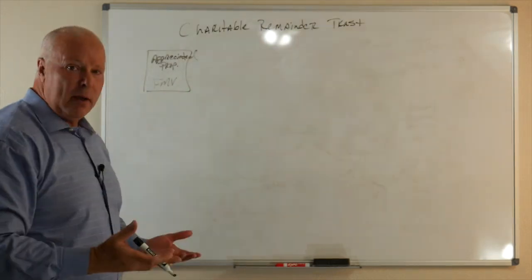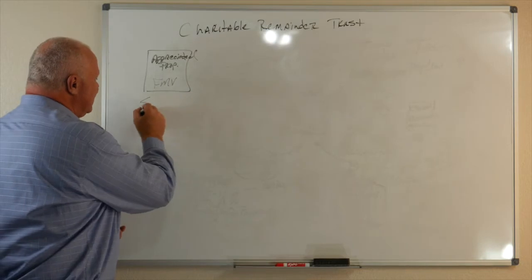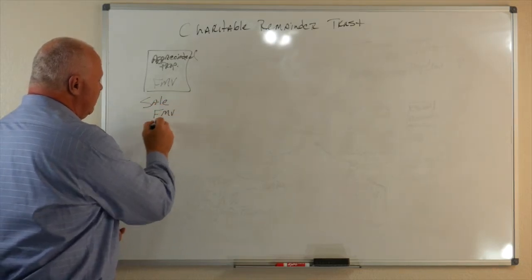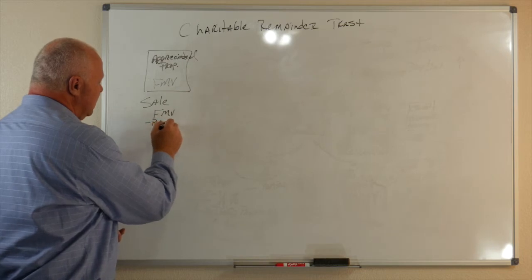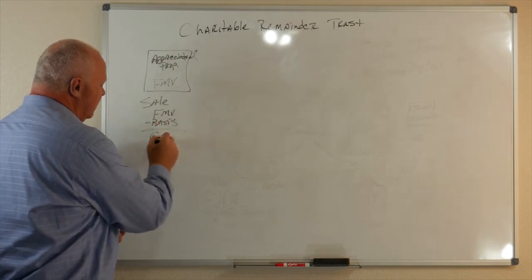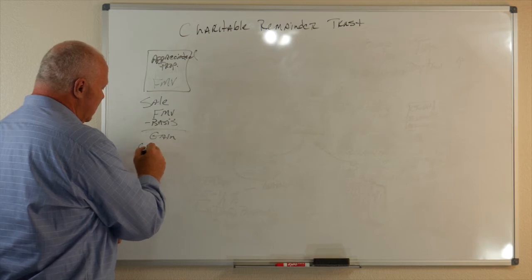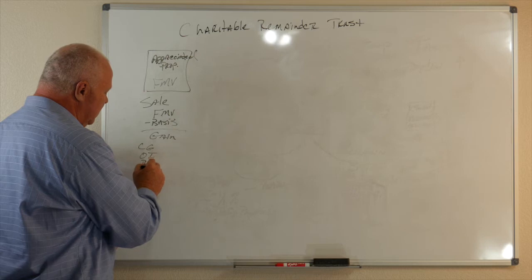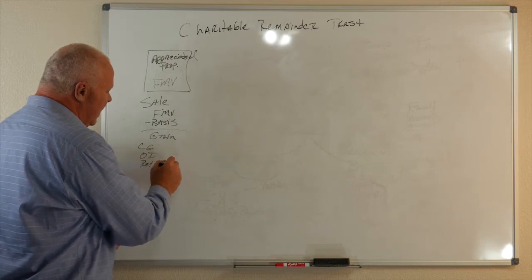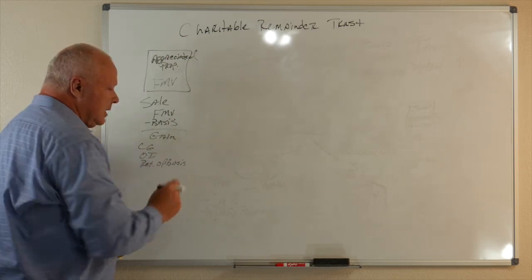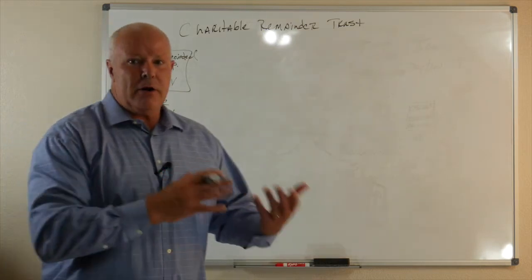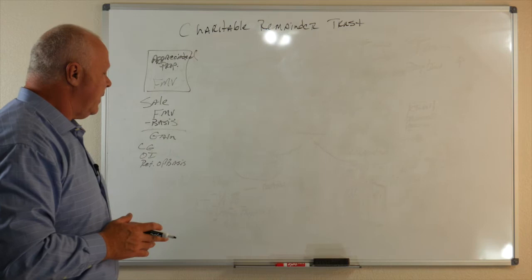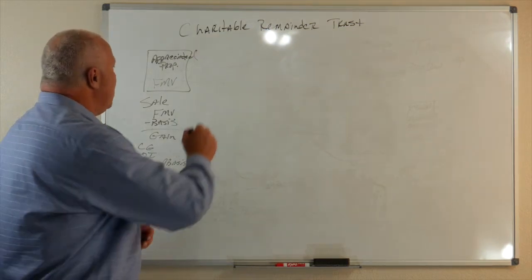Whatever that fair market value is for that asset, what's the problem? Well, if I sell, I'm going to take my fair market value minus my basis, and I've got a gain. That can be capital gains, that can be ordinary income, it could be a return of basis. Probably the biggest issue is, the bigger the gain, the less the client wants to come in and sell that asset.